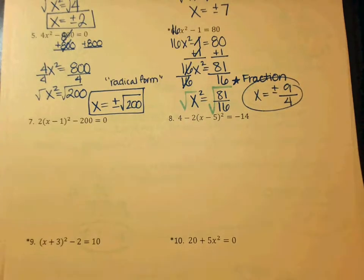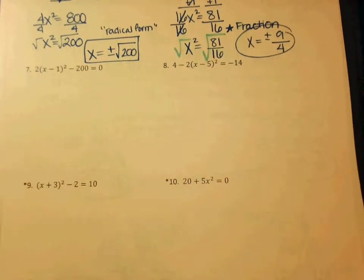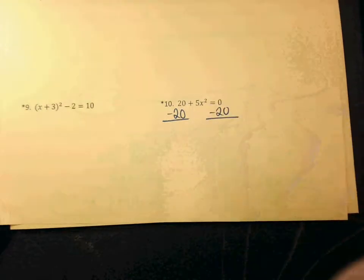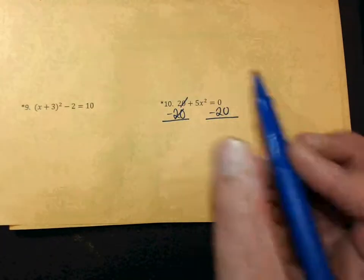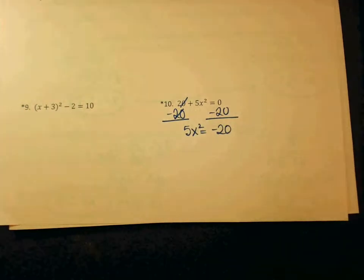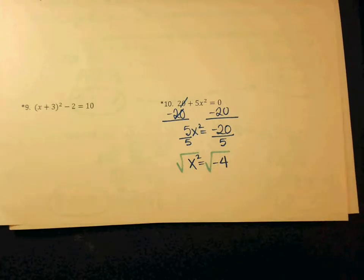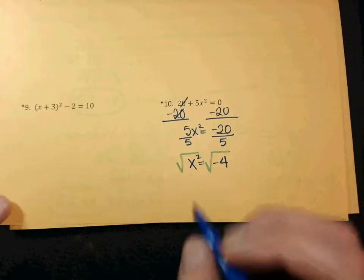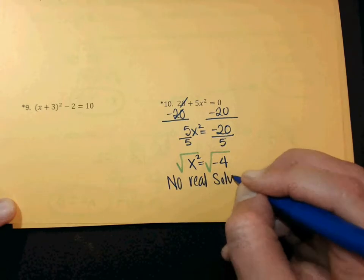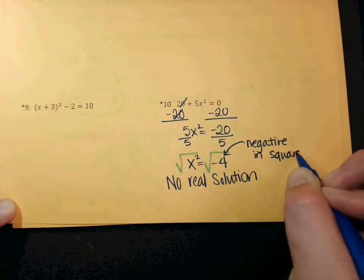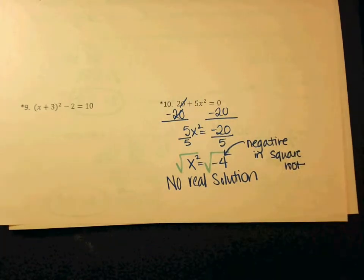Everybody pay attention — number 10 works out a little bit differently, and there's an example like it on your homework. What would I do first? Subtracting the 20. So I minus my 20, these guys cross out. I have 5X squared equals negative 20. What do I do next? Divide by 5. Negative 20 divided by 5 is negative 4. When you go to square root on both sides, are you allowed to square root a negative? No — and if you put it in your calculator, it would say error. So in that case, you would say no real solution. The reason is that you have a negative inside a square root.